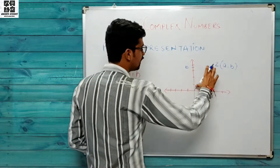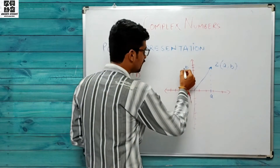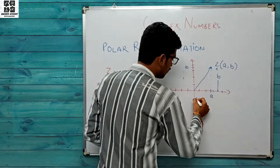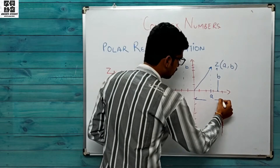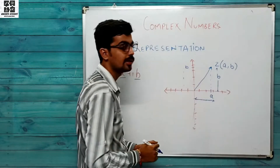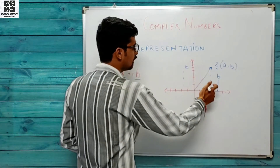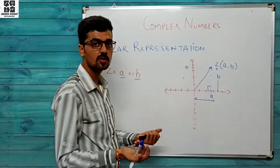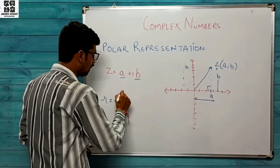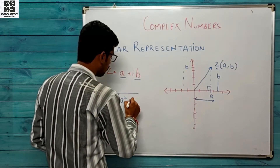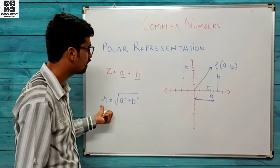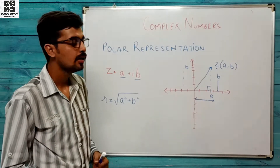Yeh length hum calculate kar sakte hain. Agar yeh length b hai toh perpendicular bhi b hogi. Yeh a units ka hoga, toh agar ek right angle triangle hai toh simple Pythagoras theorem lagaana hai. Toh r ki value equal to under root of a² + b² milegi. Yeh kuch dekha-dekha lag raha hai — modulus! Modulus ki jo value hoti hai woh yahi hogi.